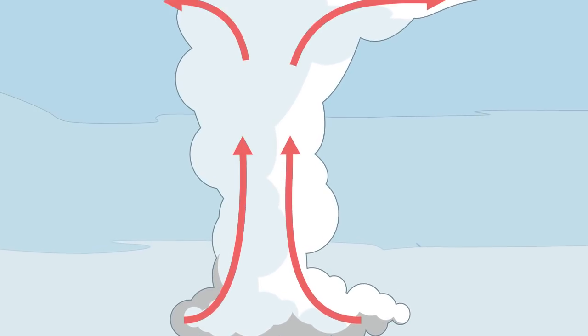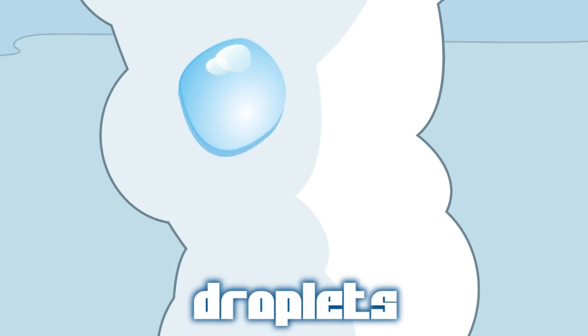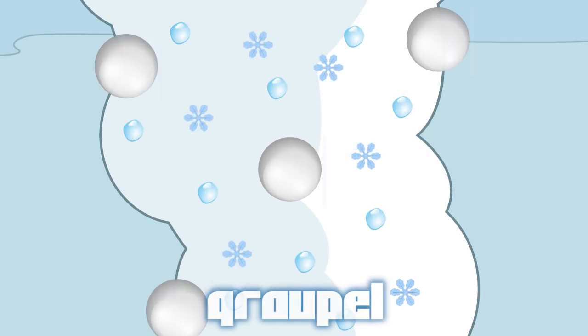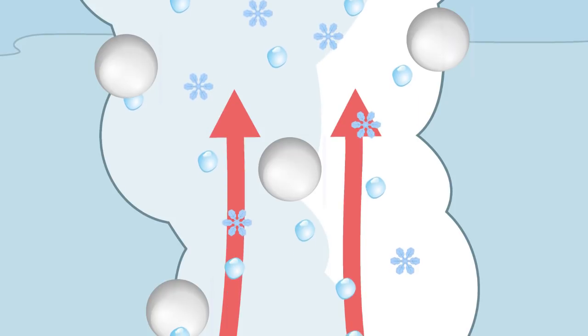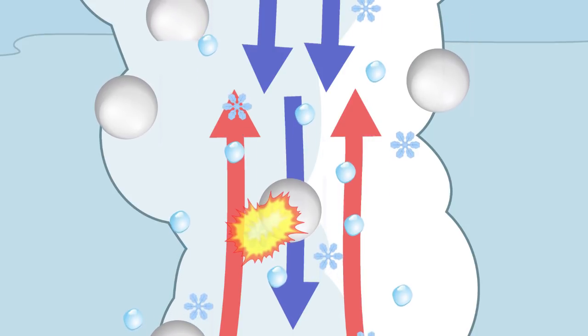A lot of the details about exactly how and why lightning occurs are still being investigated. But there is some general agreement on some of the basics. The main charging area is in the centre of the storm where the air is rapidly moving upwards and you've got temperatures between minus 15 and minus 25 degrees Celsius. This is perfect for producing a mixture of supercooled cloud droplets, small ice crystals and soft hail or graupel.